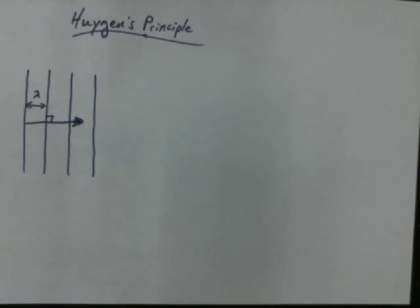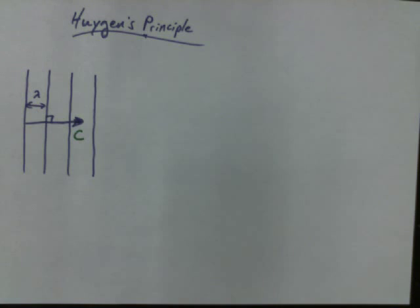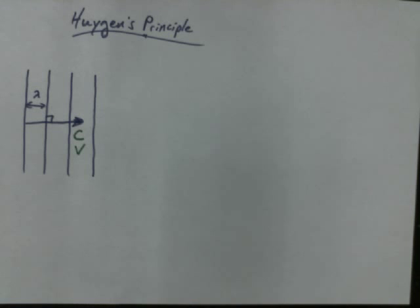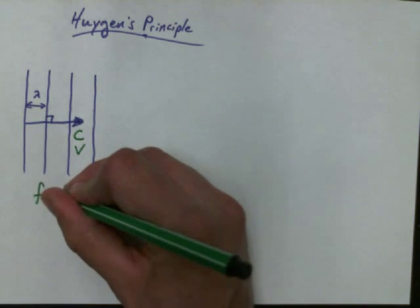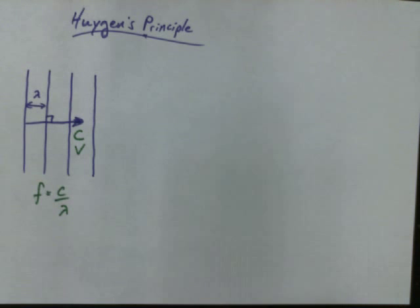We might also talk about the speed of a wave — a C value. I'm using C because I'm thinking of light, but you might use V more generally for wave speed. We'll talk about C because it's light that we really want to talk about today. And we could also talk about frequency, which is just C over lambda. Whether we're talking about speed, wavelength, or frequency, it's all part of the same conversation about waves propagating as wave fronts.